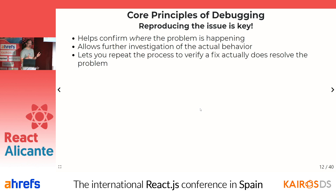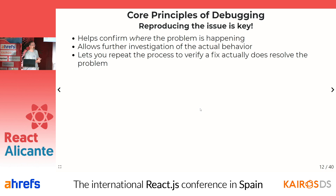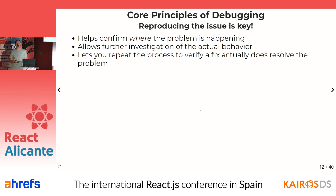It's also absolutely critical to be able to reproduce the issue — actually having steps you can follow that make the bug happen. Usually this is something like: open the page, click on the list, go to the third tab, click the button — kaboom. This is important because it helps confirm where the problem is happening. If we know the bug occurs when I click this button, probably the first place I should look is the onClick handler. It also allows further investigation: once you have the steps to reproduce, you can make it happen on demand, go investigate, and then once you have a hopeful fix, repeat the steps to verify that you've actually fixed the bug.